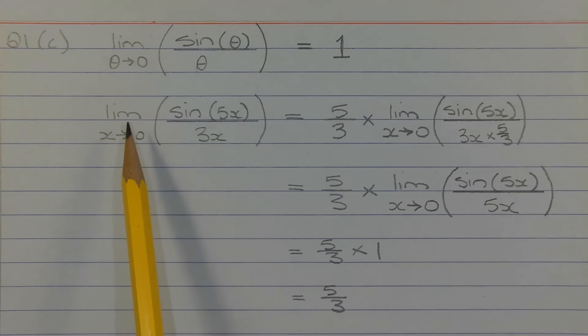So the limit as x approaches 0 of sine 5x over 3x is equal to 5 over 3 times the limit as x approaches 0 of sine 5x over 5x.